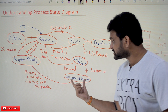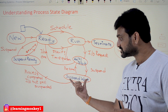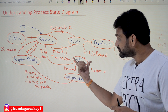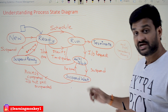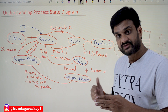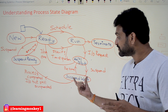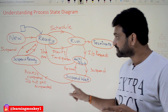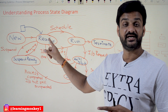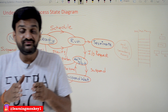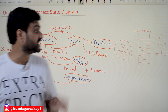One more transition to understand: if processes are in the suspend wait state and after completion of their IO operation they still cannot find room in the wait or block state, then that process will get shifted to the suspend ready state instead. As soon as it finds room in the ready state, it will get shifted to the ready state. This is how processes shift from one state to another during execution.